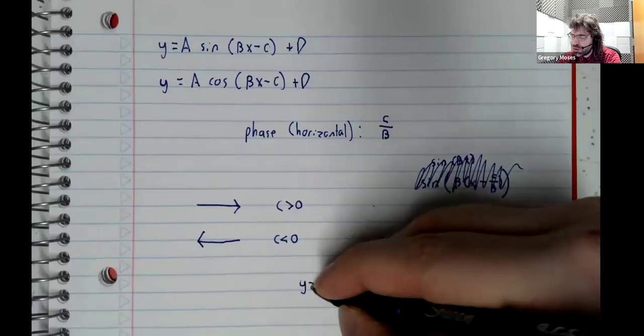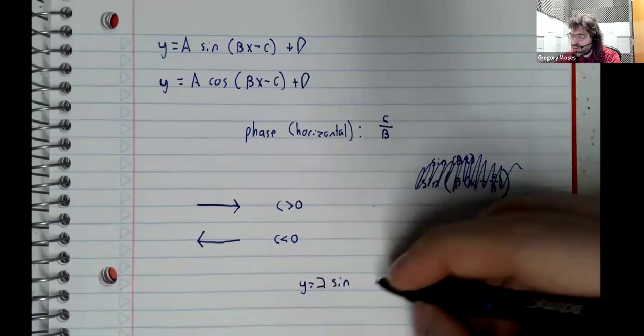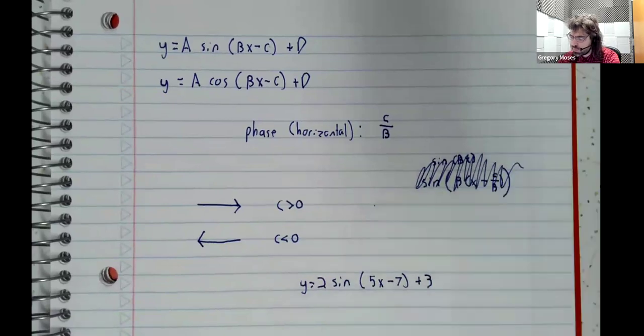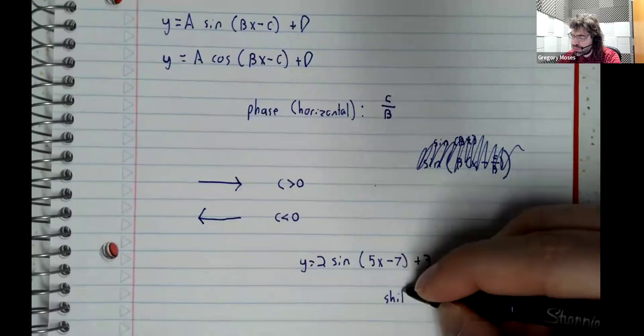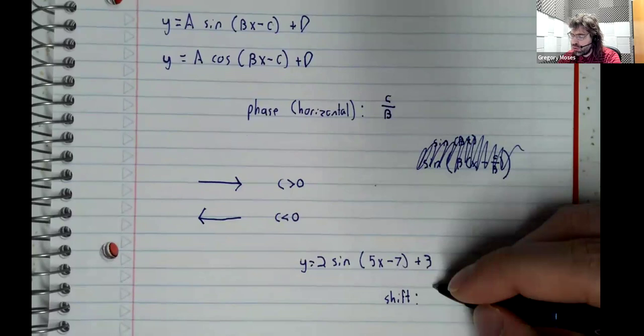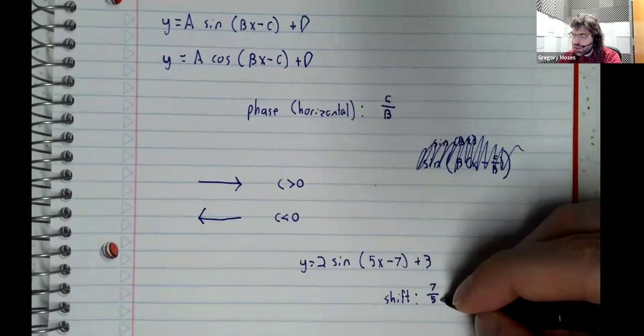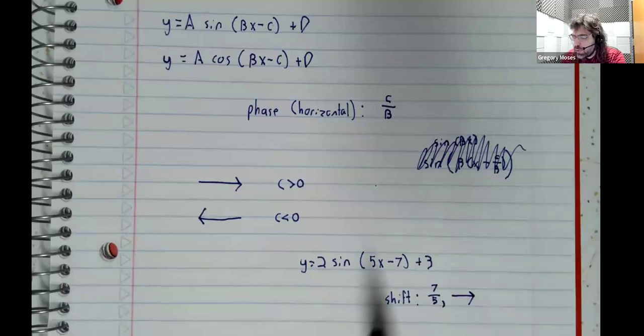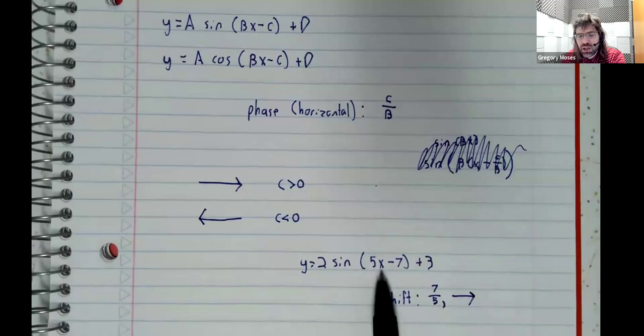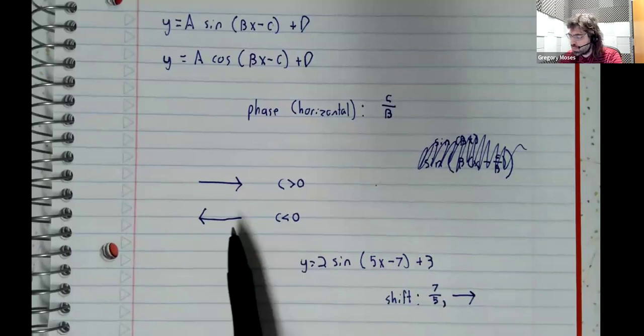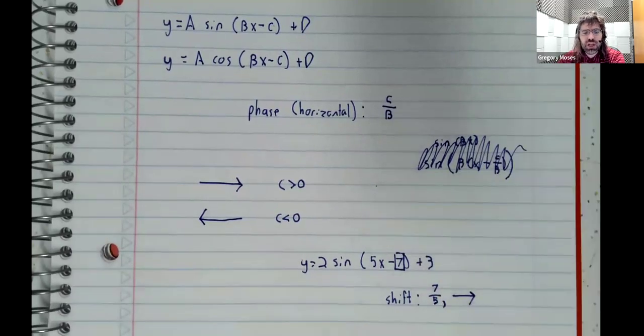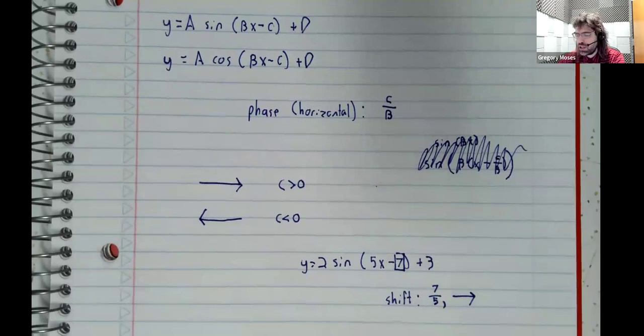something like 2 times sine of 5x minus 7 plus 3, the shift is 7 over 5 units to the right. It would be easy to make a mistake here—to see this negative sign and think we have a negative thing, so we're shifting left. But we're subtracting a positive number, positive 7, so it's to the right.